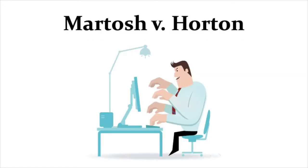The judge found that the defendant communicated with the process server by email prior to the order being made, refused to provide his home address, declined the invitation to arrange service at a time and place of his choice, and invited the plaintiff to correspond with him at his place of employment. The judge says the defendant obviously knew what was up — he was actually communicating with the process server and leading them on a wild goose chase, promising to receive documents somewhere, then making it impossible for the process server to serve him there.